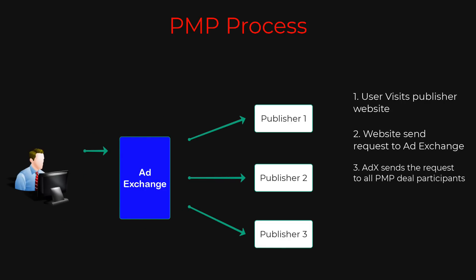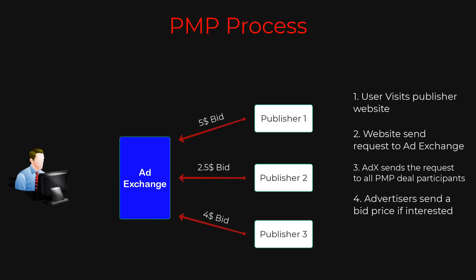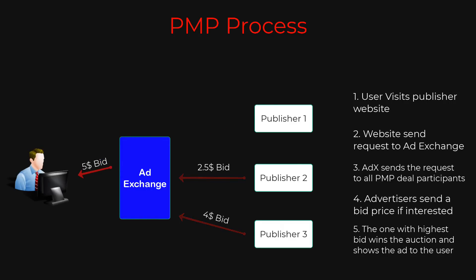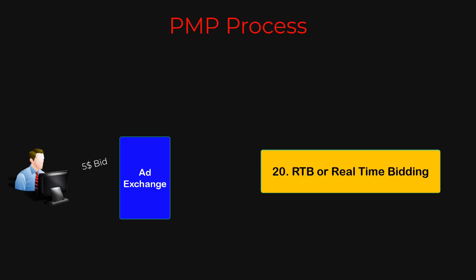The only thing mentioned in this type of deal is the minimum price each advertiser will have to pay if they want to buy any ad slot — this is called a floor price. For every ad slot sold through PMPs, a request is sent to the advertisers whenever there is a visitor on the website or app. Most advertisers participating in the PMP send their bid price, which must be at least equal to or above the floor price. This process of selecting the highest bidder is called an ad auction, and because it happens in real time as a visitor visits the website, this process is generally referred to as real-time bidding.